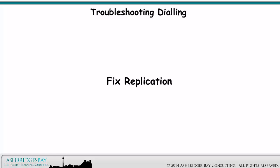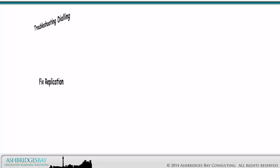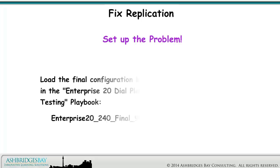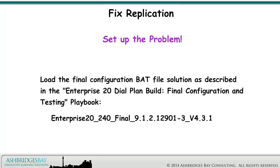Now we look at fixing replication. Set up the problem. Load the final configuration bat file solution as described in the Enterprise 20 Dial Plan Build Final Configuration and Testing Playbook.